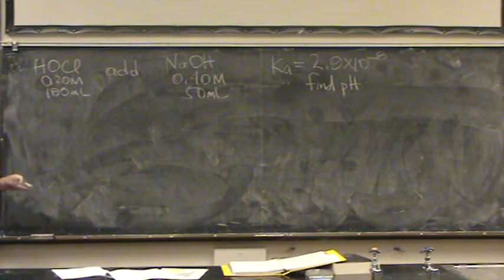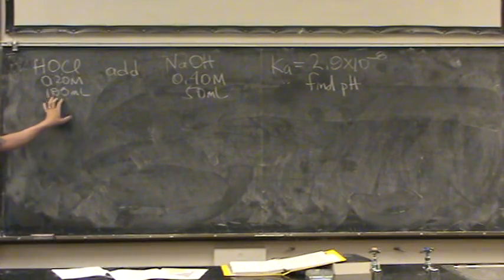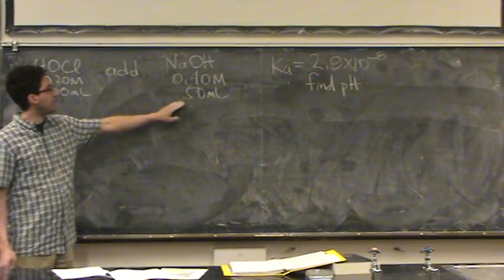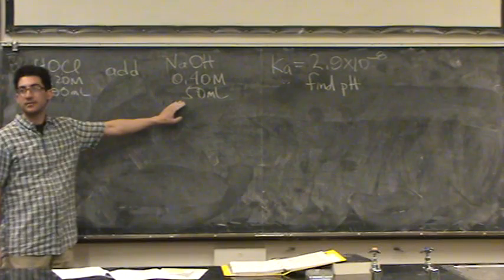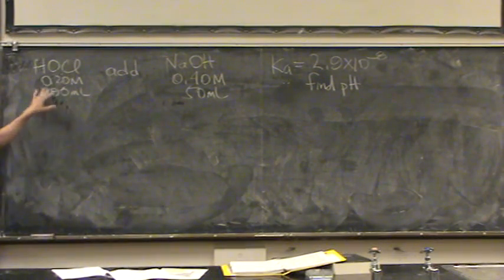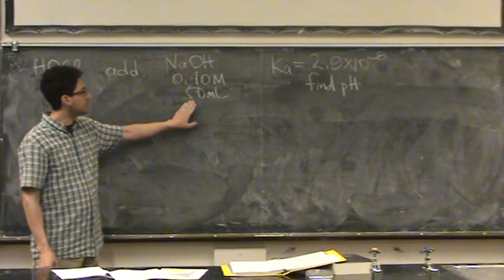Here, I'm at a particular point in the titration curve, I don't know where. I've got this in the flask, I've got this in the burette, I've added 50 milliliters so far. I started off with 100 milliliters of 0.2 molar in the flask at the bottom. I added this much.